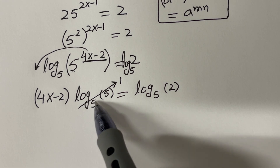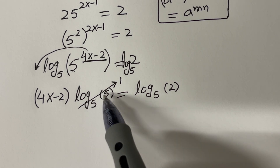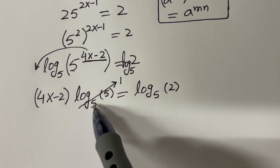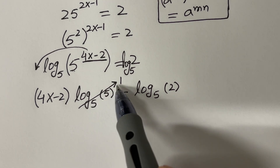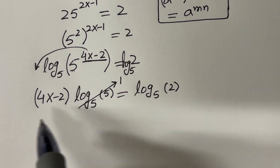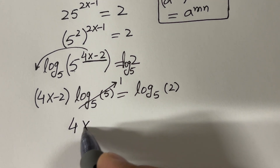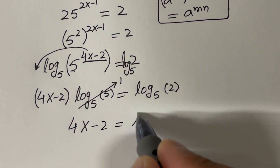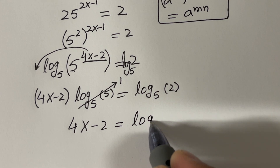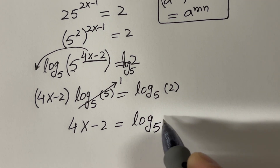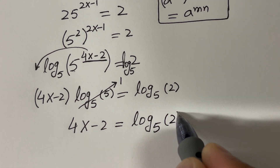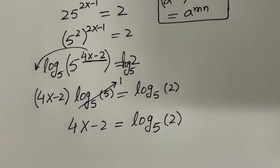Log base 5 of 5 is 1. If you have the number and base the same, that is just 1. So the left-hand side is 4x minus 2, and the right-hand side is log base 5 of 2.